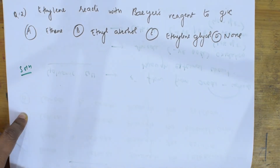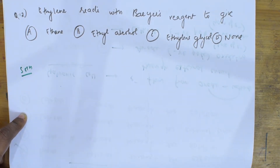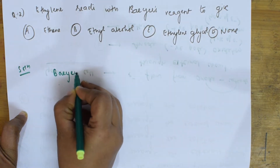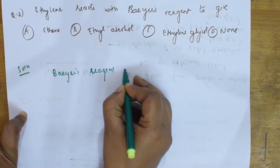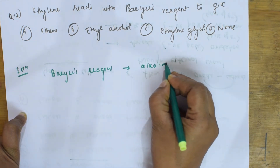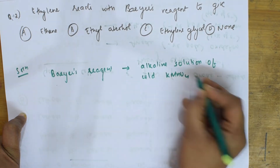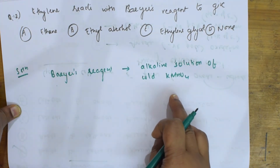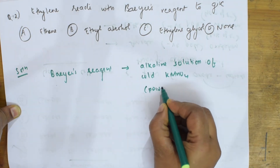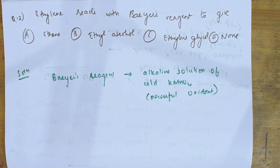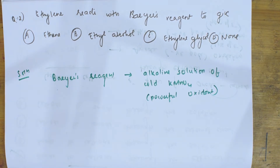What actually is Bayer's reagent? In organic chemistry, you have to remember different types of reagents. As soon as Bayer's reagent is given, you have to be clear what it is. Bayer's reagent is nothing but an alkaline solution of cold potassium permanganate. What is the importance of potassium permanganate? It is a very powerful oxidant.